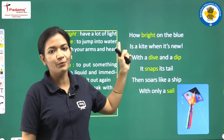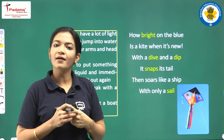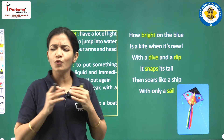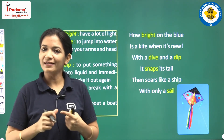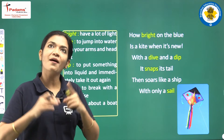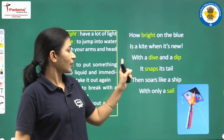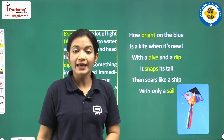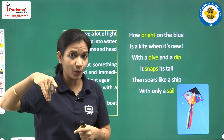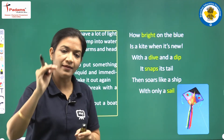Now we will start with the poem. 'How bright on the blue is a kite when it's new?' When you fly a brand new kite, it seems so beautiful and adorable as it flies in the clear sky. The colors are so vibrant and beautiful that you feel it is such a beauty in the sky. It wags its tail and does all sorts of things. 'With a dive and a dip, it snaps its tail.' The kite comes down with the movement of the wind, head down, and then rises up again — these are the actions of a kite in the wind in the sky.